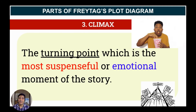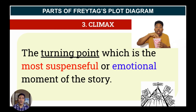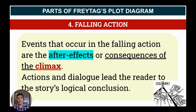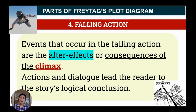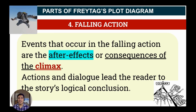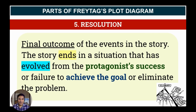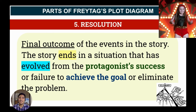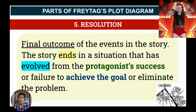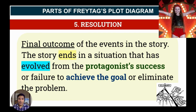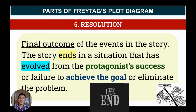Climax is the turning point, which is the most suspenseful or emotional moment of the story — this is what we are all waiting for, the peak of the story. Next is the falling action: events that occur in the falling action are the after-effects or consequences of the climax, and actions and dialogue lead the reader to the story's logical conclusion. Resolution is the final outcome of the events in the story. The story ends in a situation that has evolved from the protagonist's success or failure to achieve the goal or eliminate the problem — and here is the end of the story.